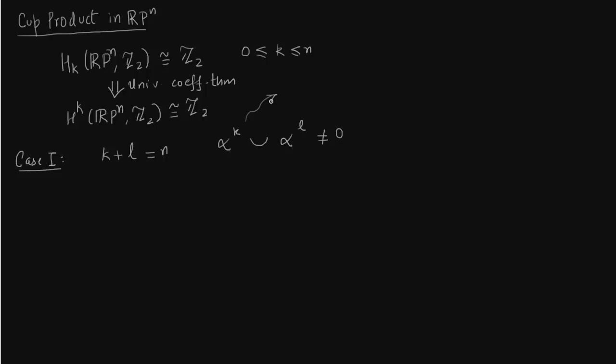Now alpha k cup with alpha L is non-zero. This is an application of the Poincaré duality theorem.